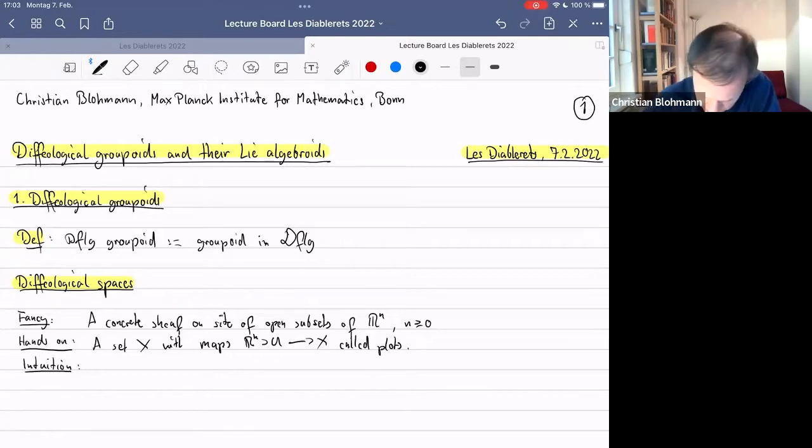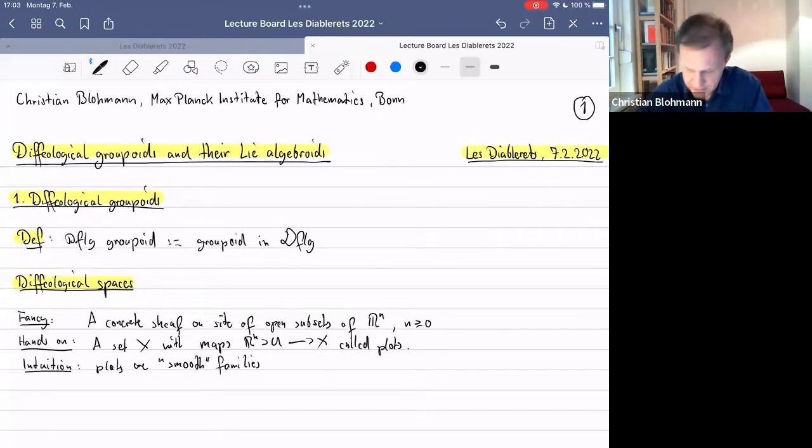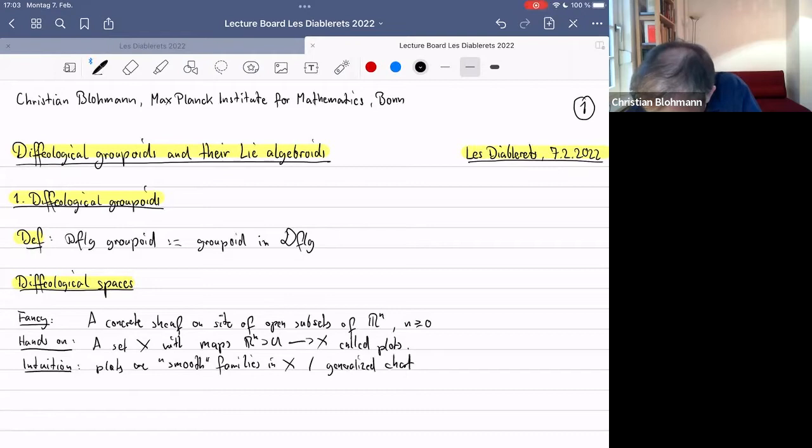Diffeologic spaces called plots. They define a sheaf on these open subsets and Euclidean spaces. So the intuition here is that the plots are smooth families. You should think of them as defining what smooth means in your category, smooth families parameterized by real parameters in X, or you could also think of them as generalized charts where now they don't have to be a local diffeomorphism or anything. In many cases that's a good intuition.